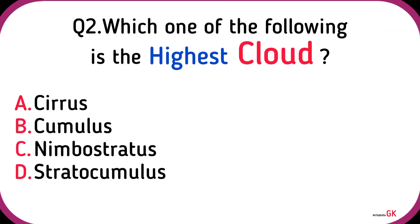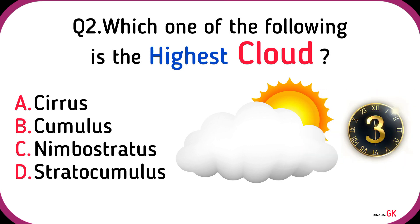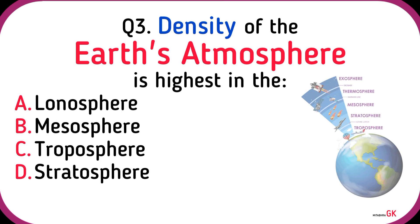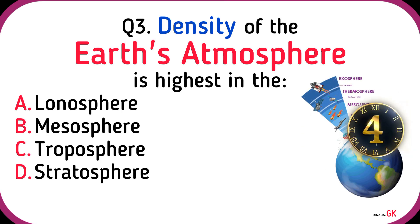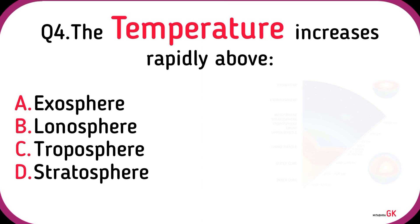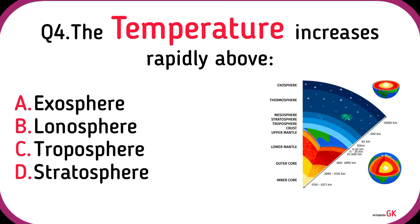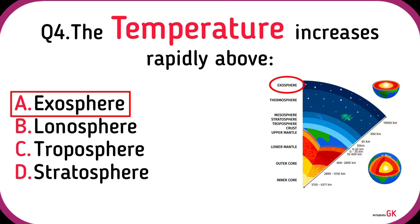Which one of the following is the highest cloud? Cirrus. The density of the Earth's atmosphere is highest in the Troposphere. The temperature increases rapidly above the Exosphere.